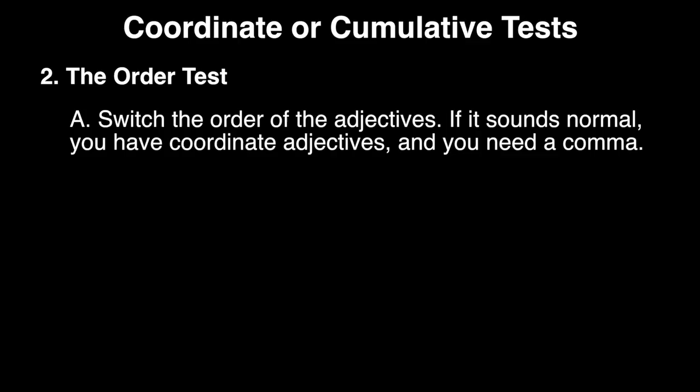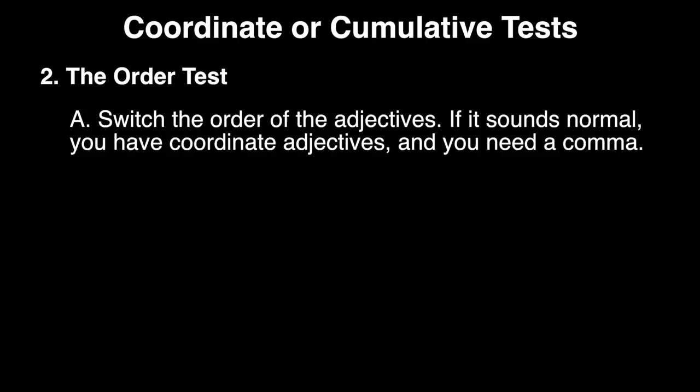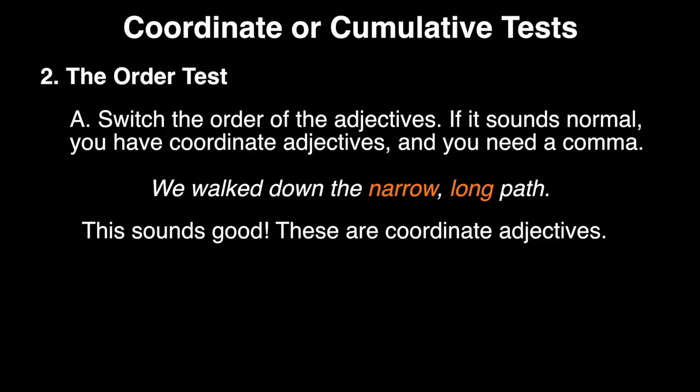All right, the second test is the order test. And to perform this one, you try reversing the order of the adjectives in your sentence. If the sentence still sounds normal, then you have coordinate adjectives, and there should be a comma or the word and between them.